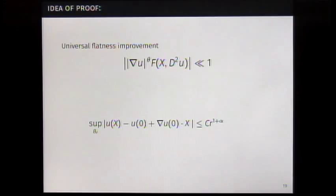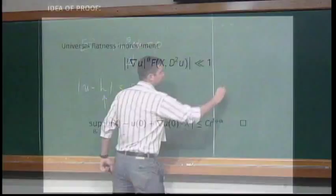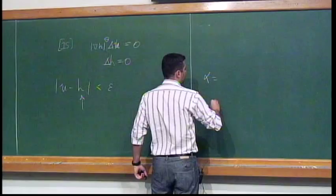After that, we can conclude we have that estimate for a small r. And then you can get the C1 estimates, C1 alpha estimates, where alpha is explicit. When alpha is 1 over 1 plus theta.